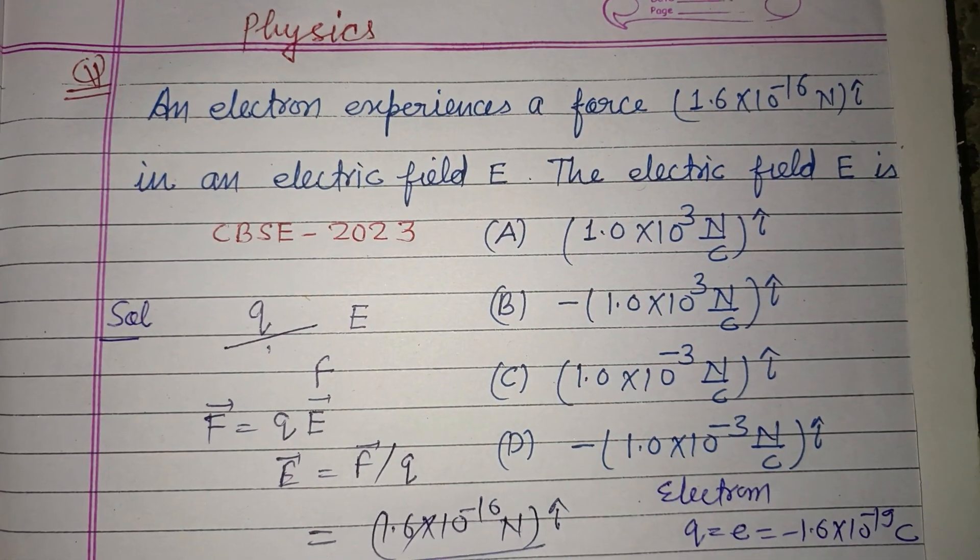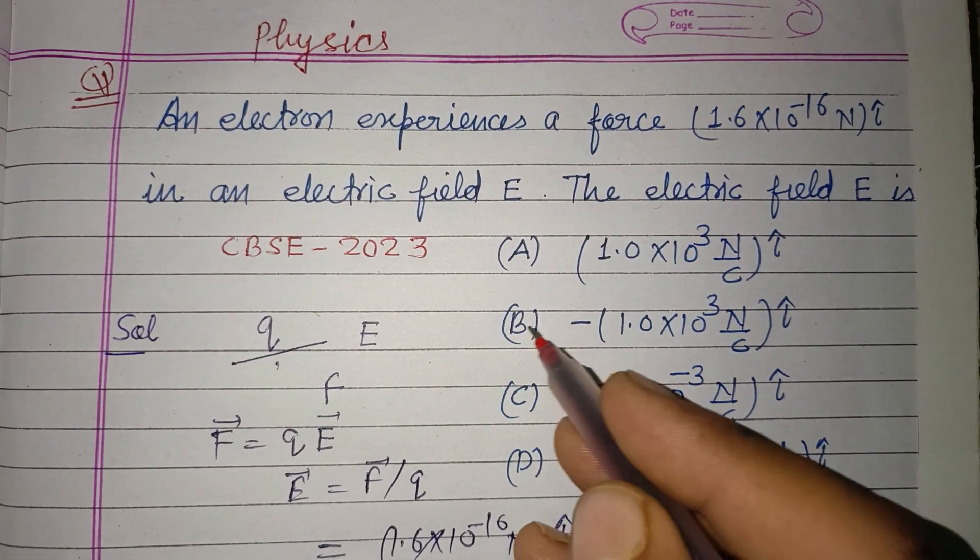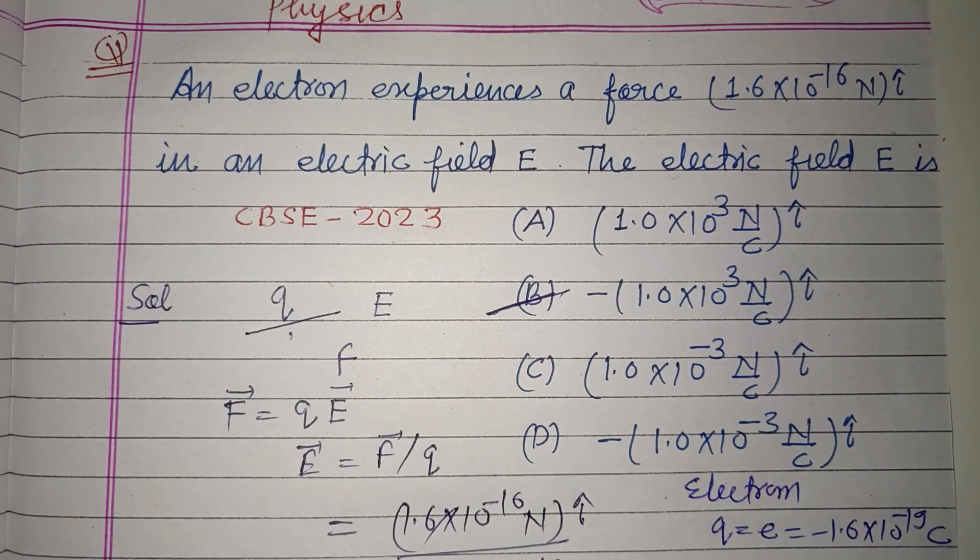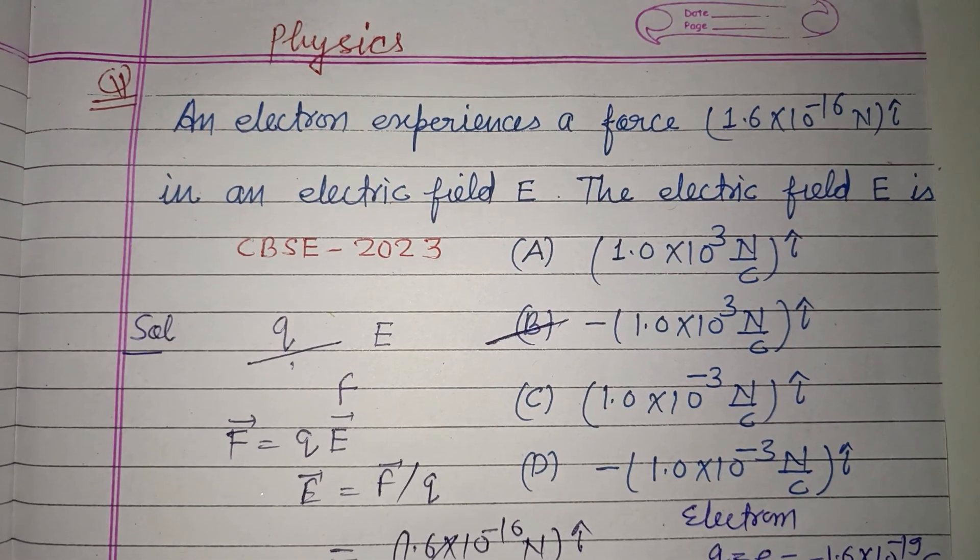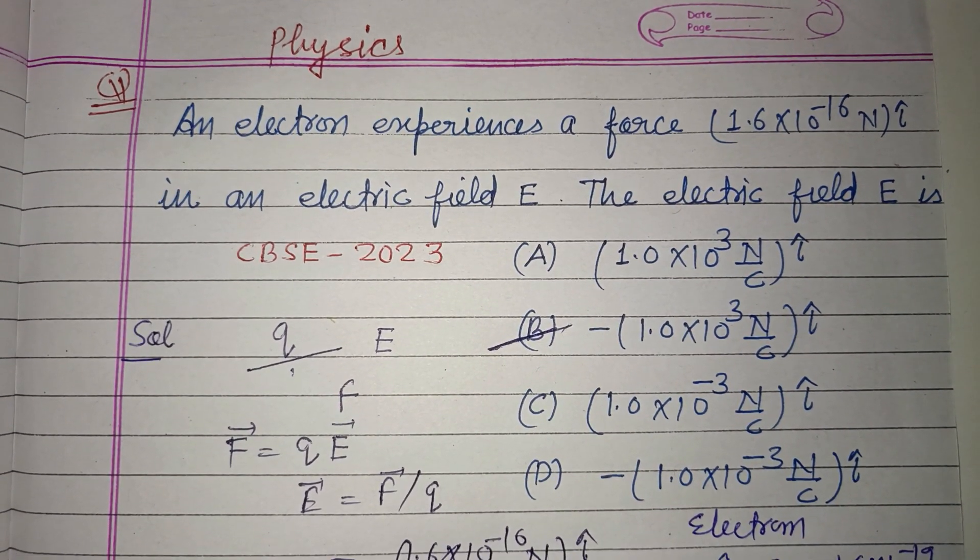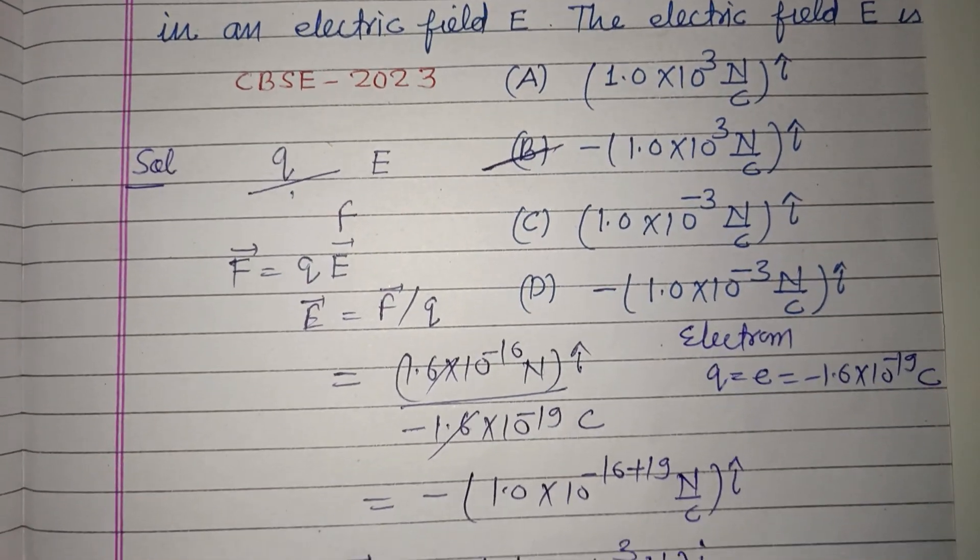And the answer is B: -1.1×10^3 Newton per coulomb î. So I hope you got it. Please like the video, subscribe the channel, thanks for watching.